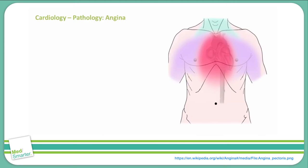Let's continue on with some more cardiology. We will discuss angina today. Angina is specifically ischemic myocardium that is secondary to coronary artery narrowing or spasm. There is no myocyte necrosis associated with angina.